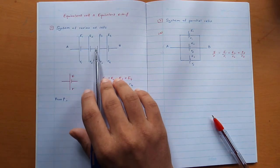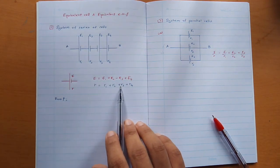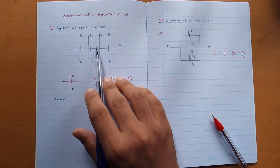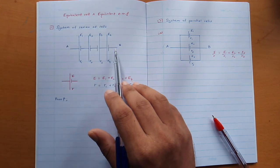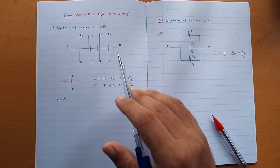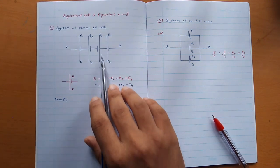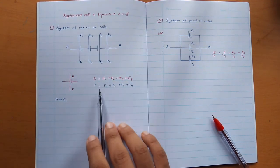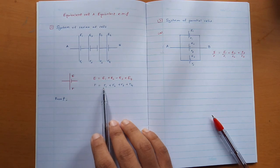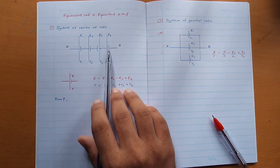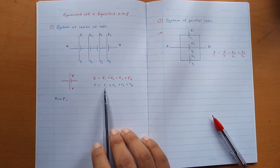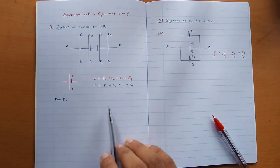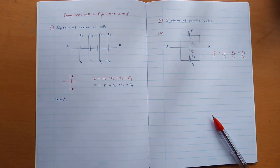The equivalent internal resistance R can be written as R equals R1 plus R2 plus R3 plus R4. Note that even if a battery is connected in the opposite direction, the resistance is the same — because whether the battery is connected this way or that way, the resistance experienced by the current is the same. So internal resistance is always the sum of all the individual resistances.